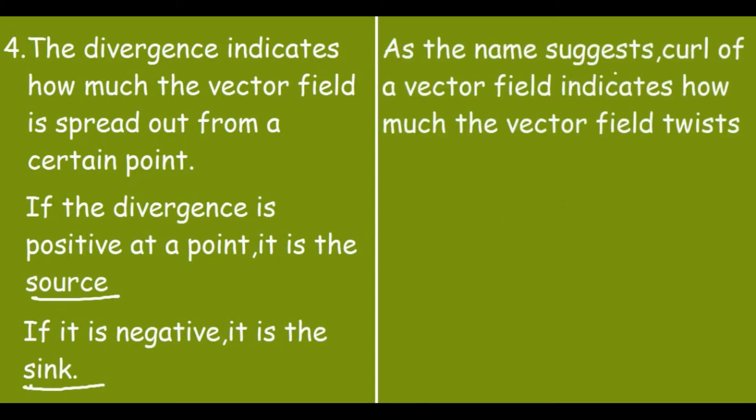Now let's study a little bit about the curl. As the name suggests, curl of a vector field indicates how much the vector field twists. A good example for this is if v indicates the linear velocity field, then the angular velocity is given as omega equal to half of curl of this velocity field.